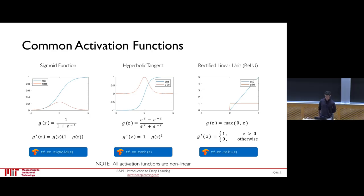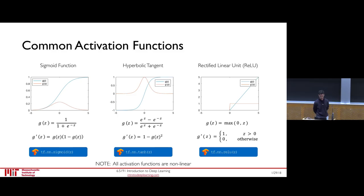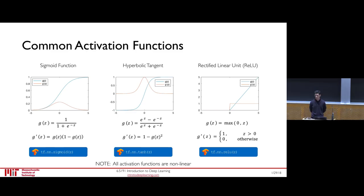There are many types of nonlinear activation functions in deep neural networks. The sigmoid is commonly used to produce probability outputs. A very common alternative is the rectified linear unit, or ReLU, which is popular because it's extremely simple to compute — it's piecewise linear, outputting 0 for inputs less than 0 and x for inputs greater than 0, with gradients of just 0 or 1.